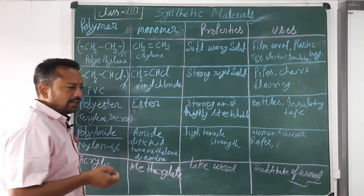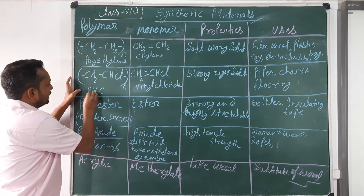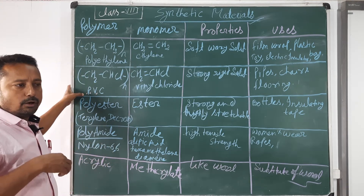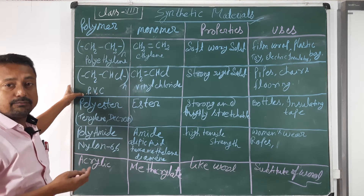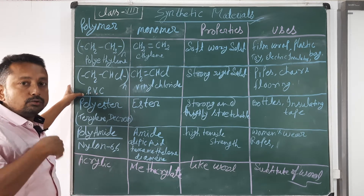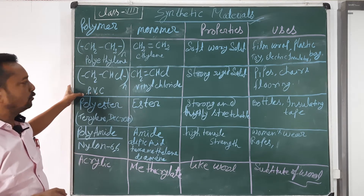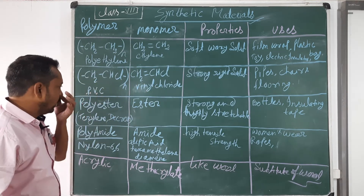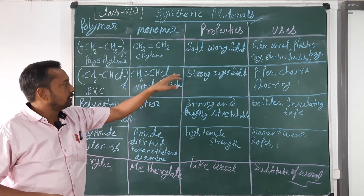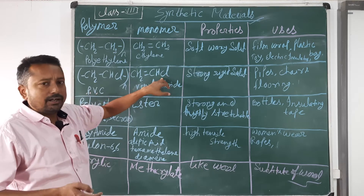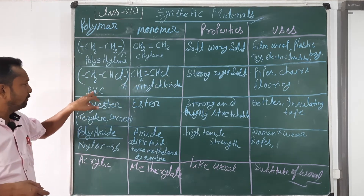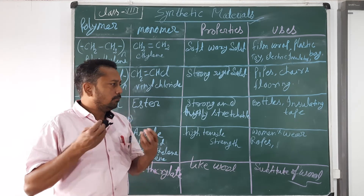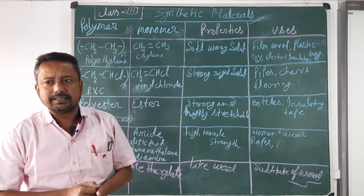The second important polymer is PVC — polyvinyl chloride. The prefix 'poly' is used because a maximum number of small units attach together to form a larger unit. Polyvinyl chloride is a polymer of vinyl chloride, whose monomer is CH2=CHCl. When this compound undergoes polymerization, PVC is formed. It is a strong and rigid solid used in manufacturing plastic chairs, tables, plastic covers, and more.